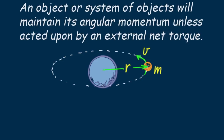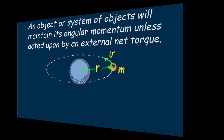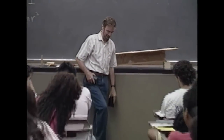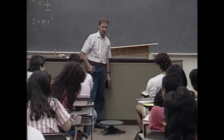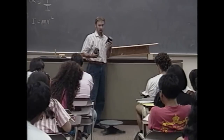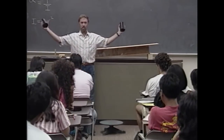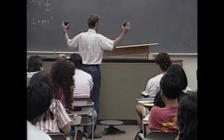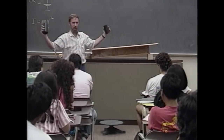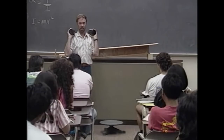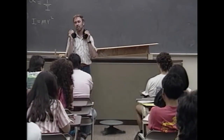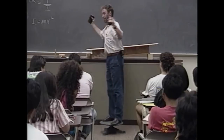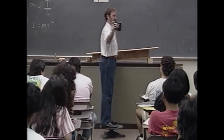Let's drop in on one of my conceptual physics classes. I've got here a very low friction rotating platform. I'm going to stand on that platform and hold these weights out. When I hold these weights out, I'm going to spin. When I hold them out far, do I have a lot of rotational inertia or a little? How about when I pull them in — a little? So if I get rotating and hold them out, what happens when I pull them in?